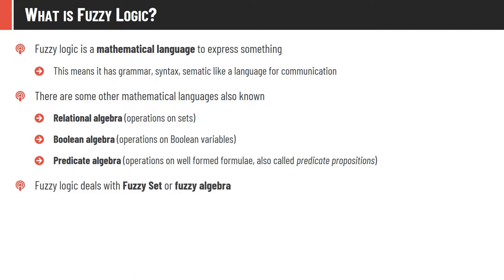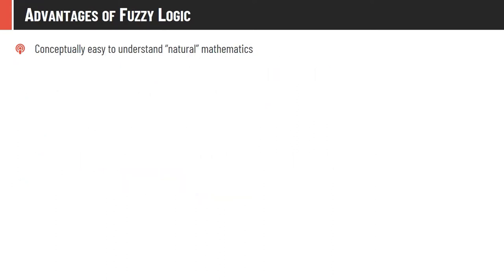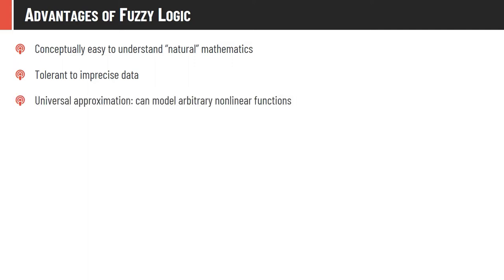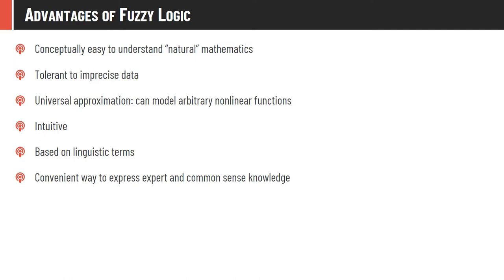Advantages of fuzzy sets: conceptually easy to understand and very natural, since humans also think from a fuzzy logic perspective. Fuzzy logic is tolerant to imprecise data — even if data is not in perfect form, fuzzy logic can still work with reduced accuracy. Universal approximation is possible — any complex function can be modeled using fuzzy logic. It is intuitive, based on linguistic terms, and a convenient way to express expert and common-sense knowledge.